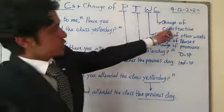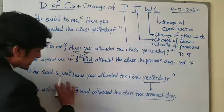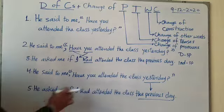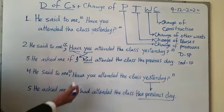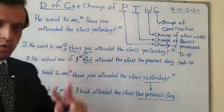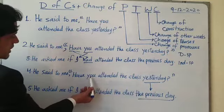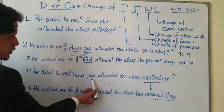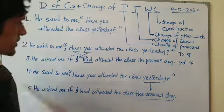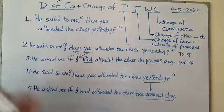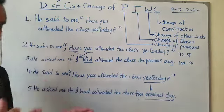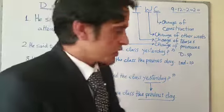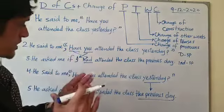The change of construction occurs automatically. Look at 'Have you attended the class yesterday?' — this is an interrogative sentence. There are two basic signs of an interrogative sentence: first, the auxiliary is written before the subject ('Have you' — auxiliary before subject), and second, a question mark is written at the end. So we have two signs of an interrogative sentence in the direct speech.